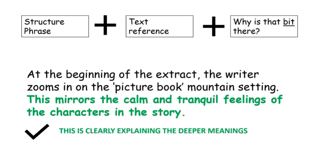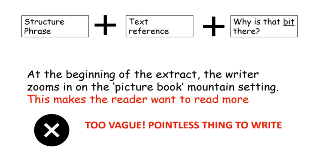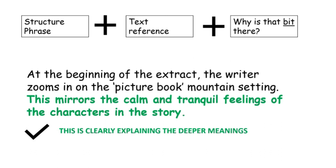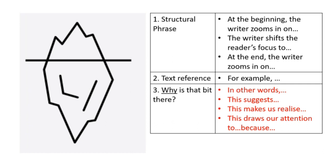However, here is an example of what not to put: 'but this makes the reader want to read more.' So many people will be writing that and it gives us no extra information at all — it's really bland. Make sure you're writing something more along these lines: 'This mirrors the calm and tranquil feelings of the characters in the story.' You can analyse the focus at the beginning, middle and end of the extract, but it's even better if you write about the focus change in each paragraph — you could have 8 to 10 points of focus shift or focus lingering.